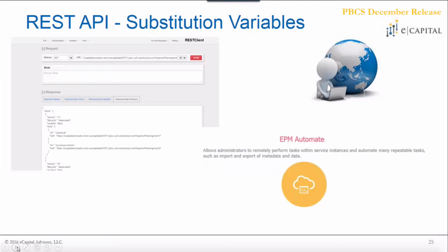In the image on this slide, there are plugins you can install on your browsers that will make the APIs a little easier to understand — it parses computer language into something more human-legible — but it still is not extremely user-friendly. You need to be pretty technical to understand these commands. What this may point to is EPM Automate, the utility Oracle provides to automate metadata loads, file loads, calculations, and similar tasks. EPM Automate is actually just a tool that makes these API calls for us.